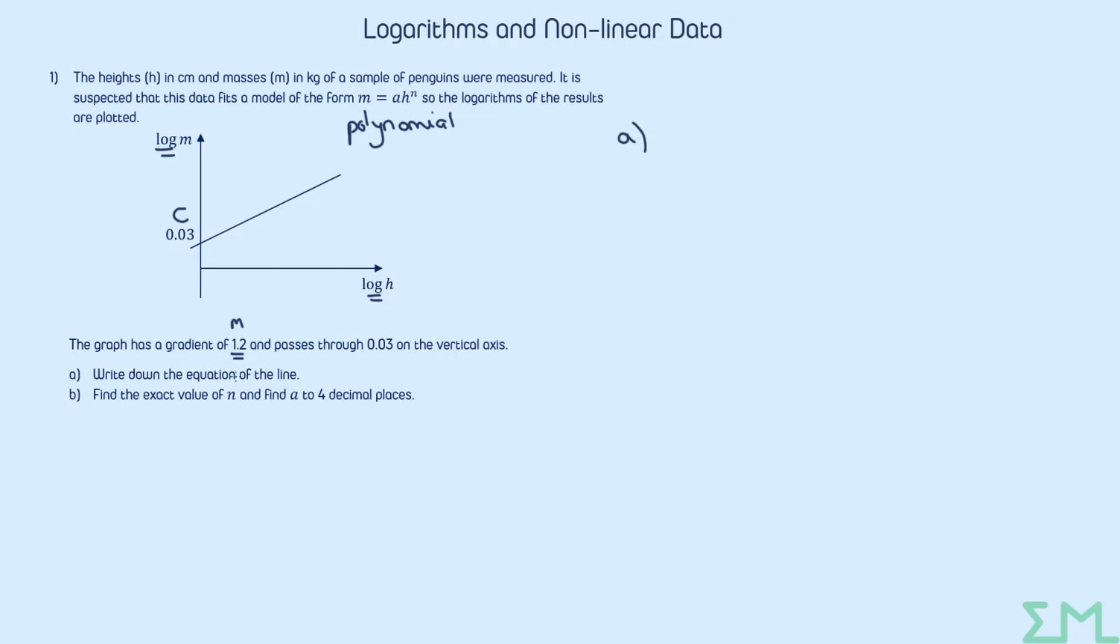So there is a common mistake that people make here. We are so used to writing y equals mx plus c that as soon as we know we're writing a straight line graph and we've got an m and a c, it is so tempting to write down y equals 1.2x plus 0.03. Another thing that's tempting to write down is thinking, I'm working in h's and m's, so maybe m equals 1.2h plus 0.03. This is slightly better because at least it uses the original variables. Both of them, however, are not correct.